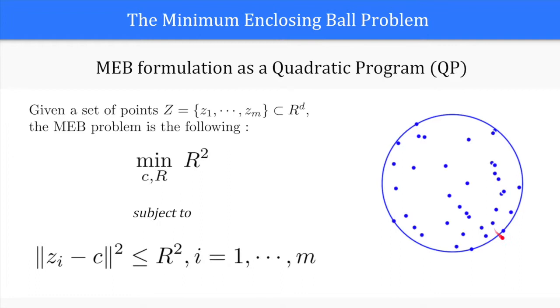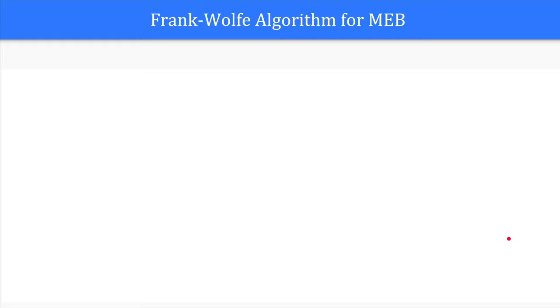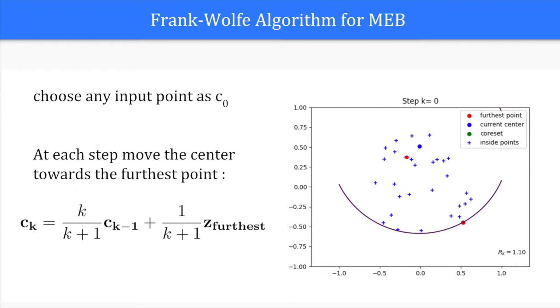We can also use the Frank-Wolfe algorithm to compute an approximation of the minimum enclosing ball of a dataset. Here we will show an animation of how this algorithm works. In this algorithm the ball center is expressed as a convex combination of support vectors. We start with the center located at an arbitrary point of the dataset. At step k, update the position of the center by moving towards the furthest points with coefficient 1 over k plus 1.